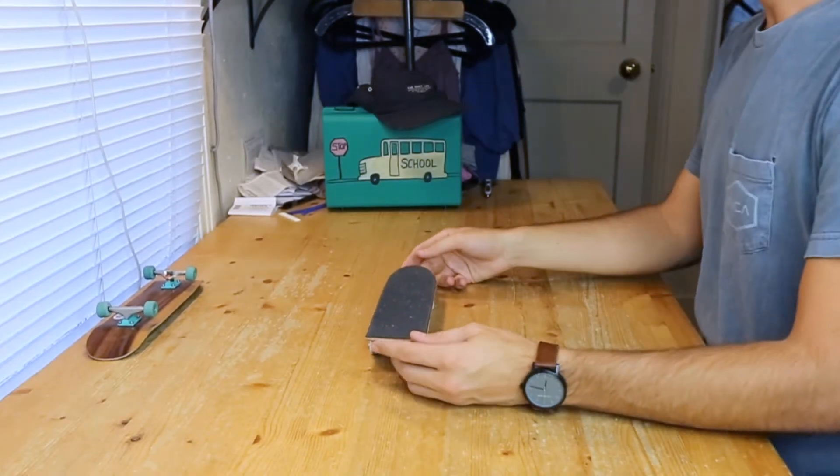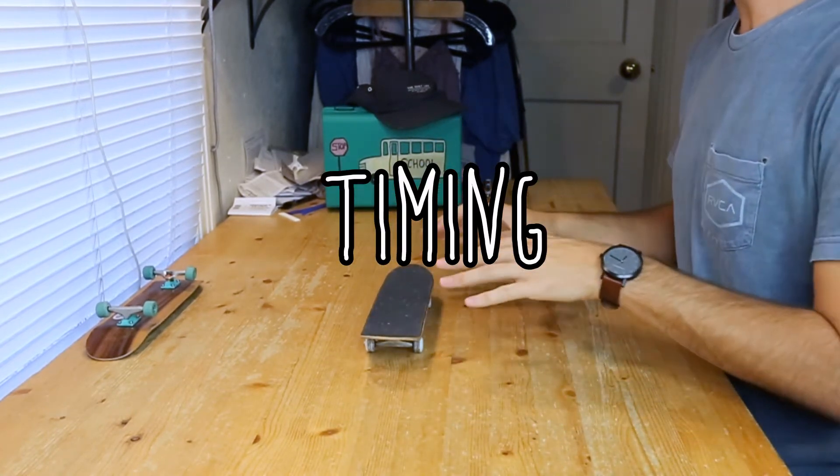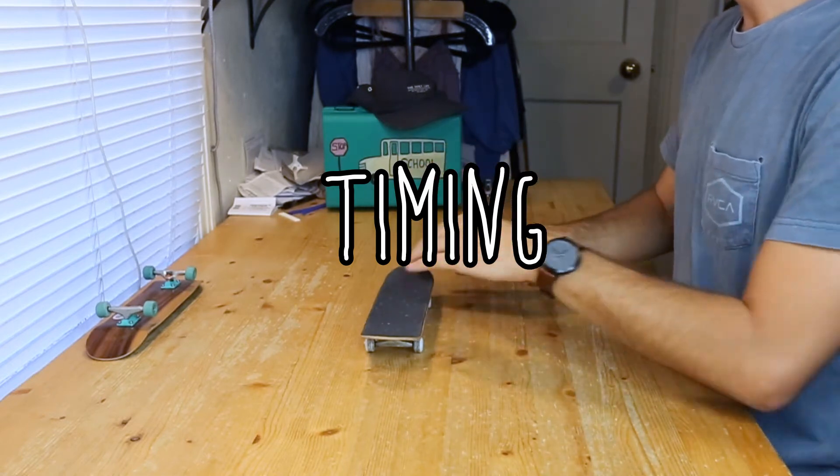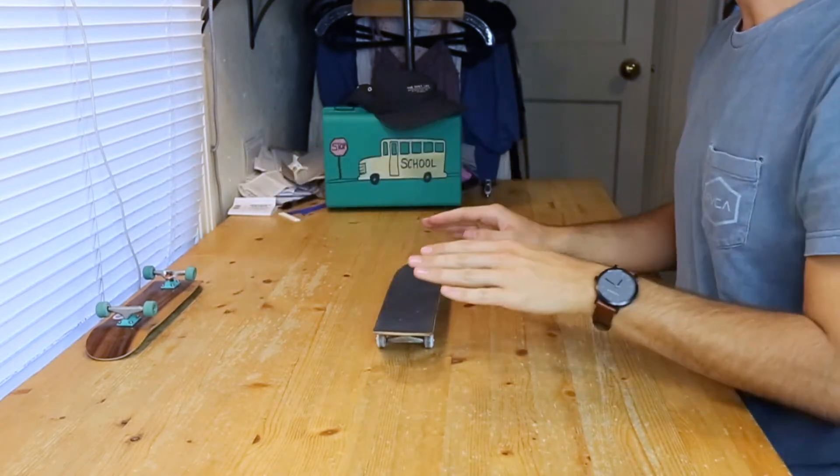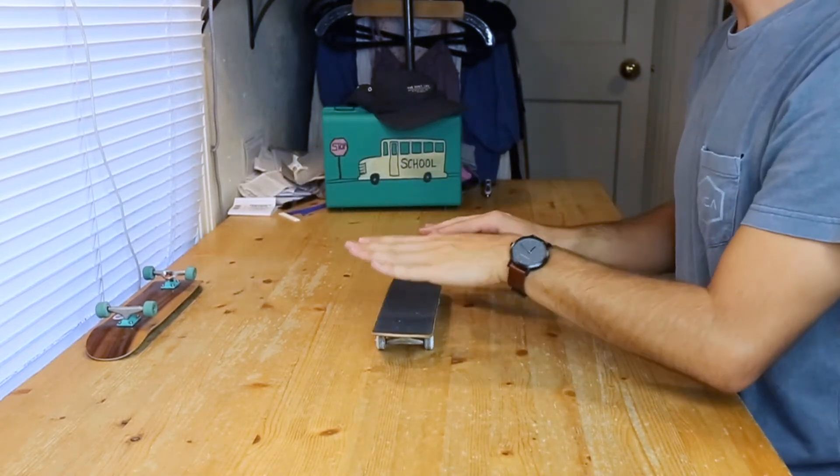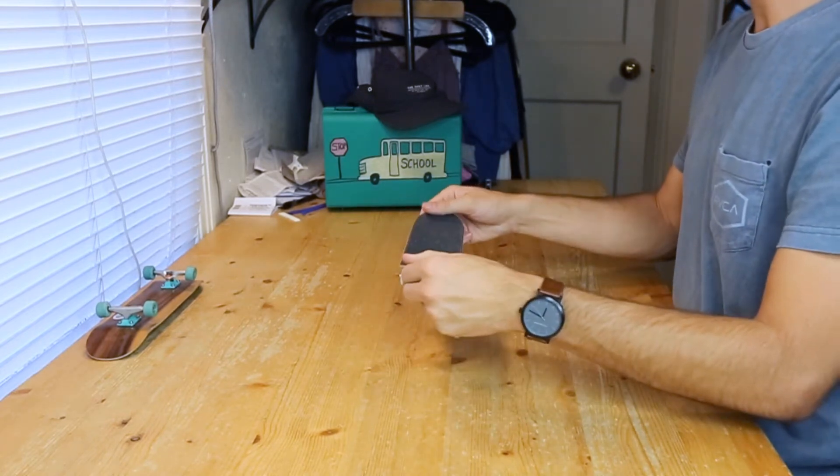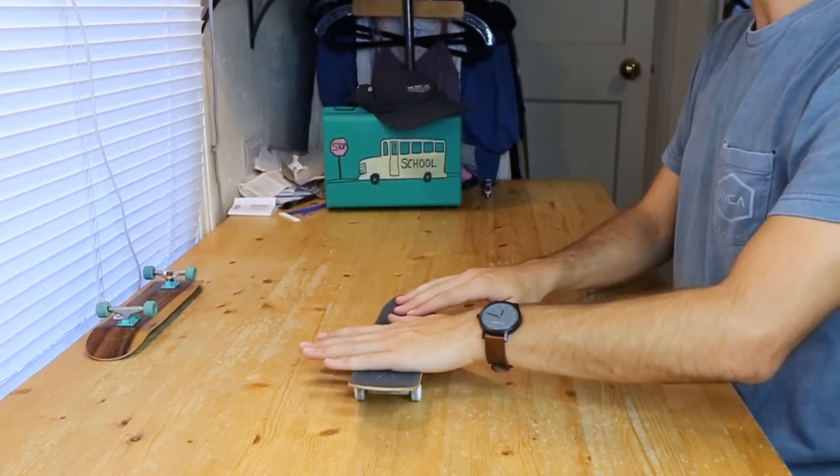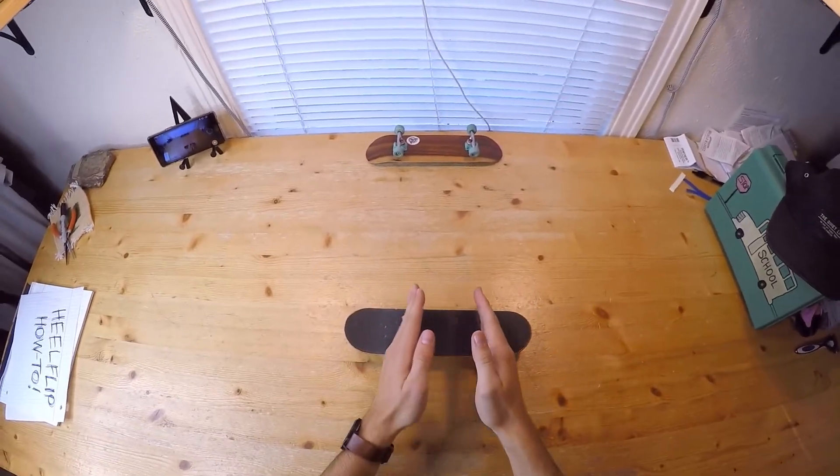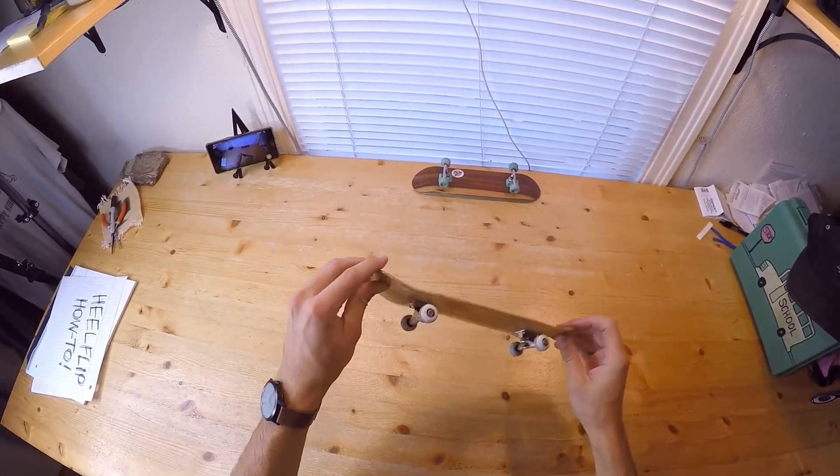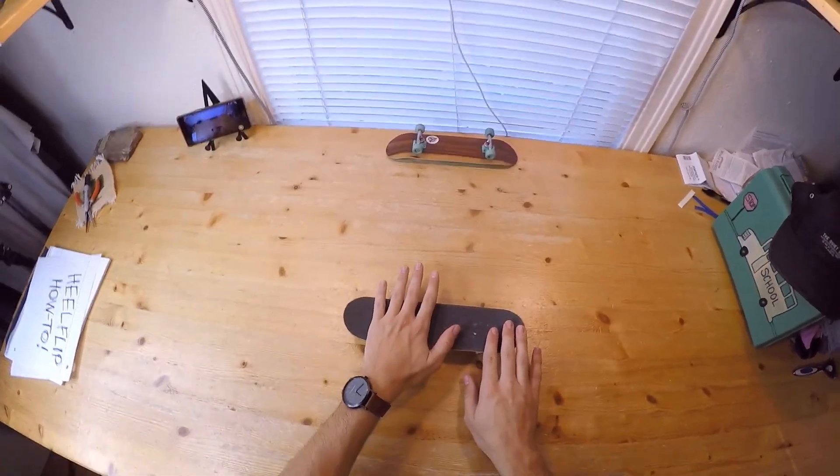Now, just as important as hand placement is timing. With anything in fingerboarding and skateboarding, timing is crucial. What I mean by timing is the time between your pop and your flick. If you flick and pop close together, you would most likely have a low, fast heel flip. So that is a fast pop - the tail didn't even hit the ground. If you space those timings out, you can kind of hone the speed and height of your flip. So it's important to get that timing right.